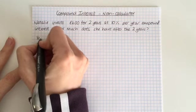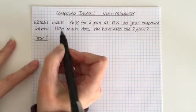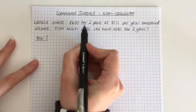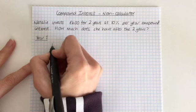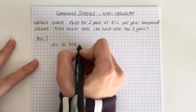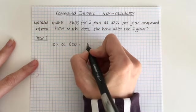So I always try and keep it as organized as possible. So I put year one and what we're told is that it's 10% and she's got £600. So we need to work out 10% of £600. So remember finding 10% you divide the number by 10. So that's going to be £60.